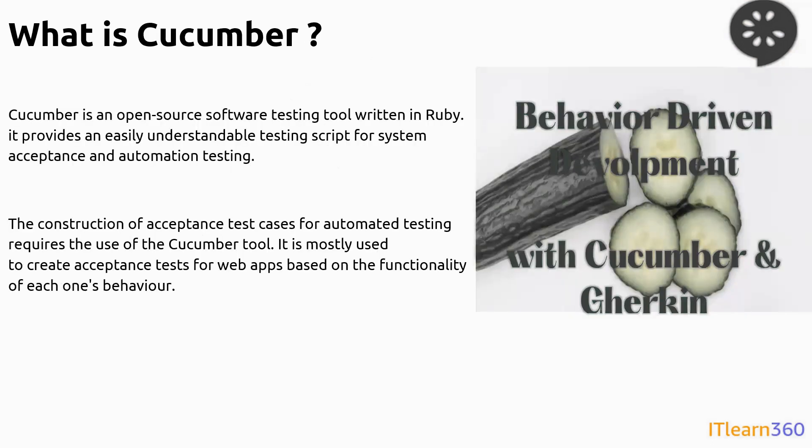Cucumber is an open source software testing tool written in Ruby. It provides easily understandable testing scripts for system acceptance and automation testing. The construction of test cases uses this Cucumber tool, and it's mostly based on web application functionalities and the behavior of the particular application. So Cucumber test cases are based on the behavior of the application and are written in simple English language.